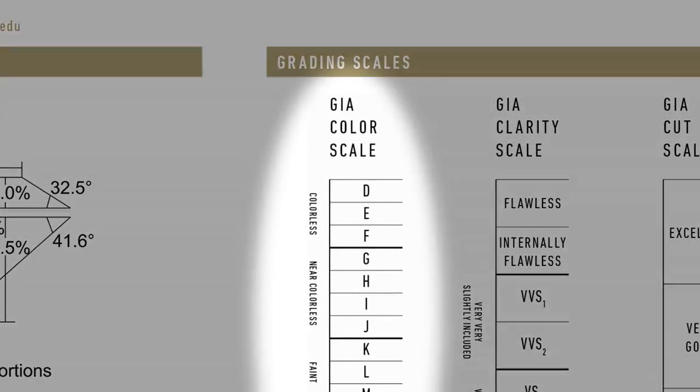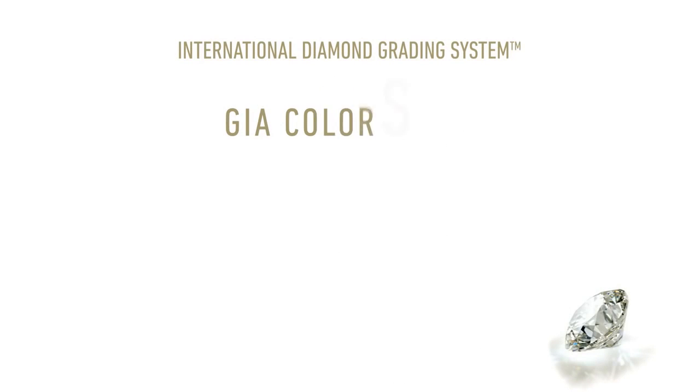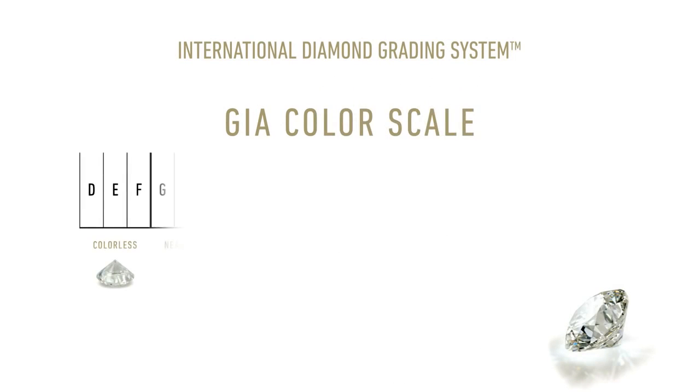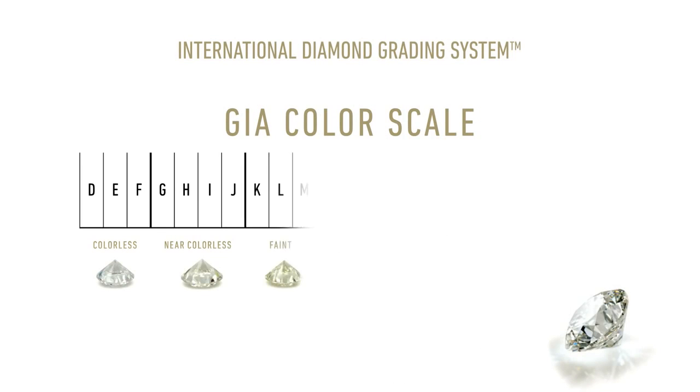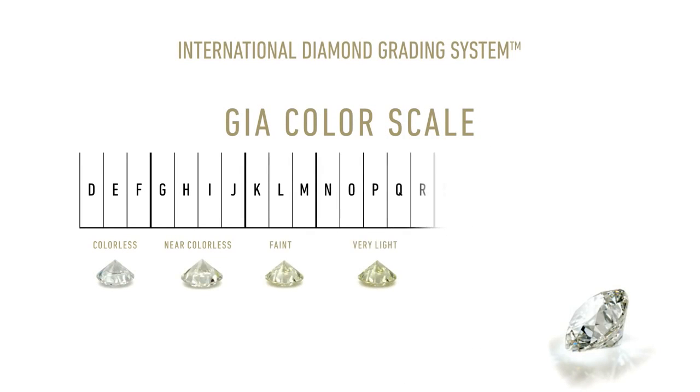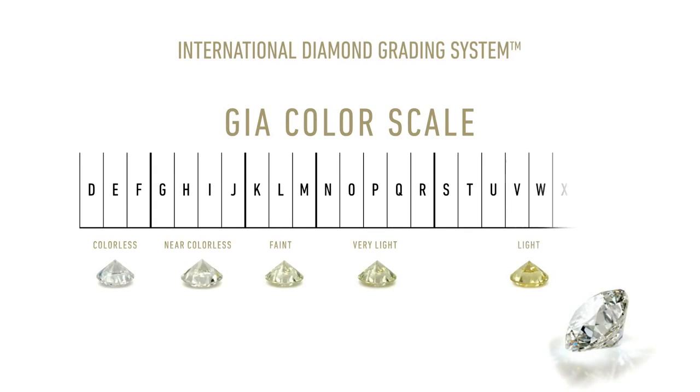The GIA color grading system describes the diamond's lack of color, ranging from D, which is colorless, to Z, which is light yellow or brown.